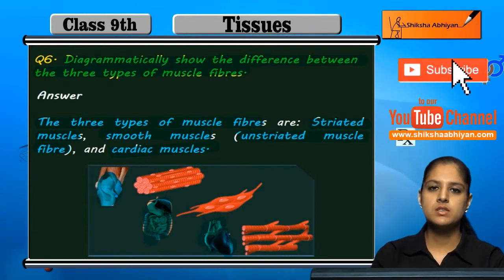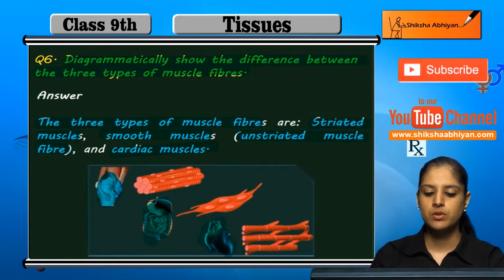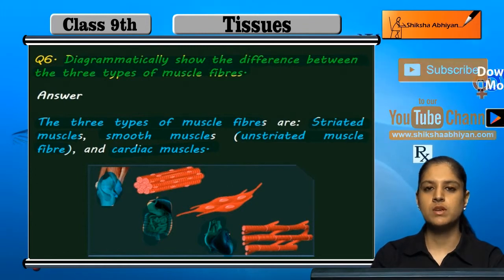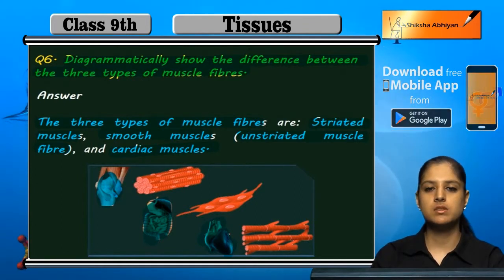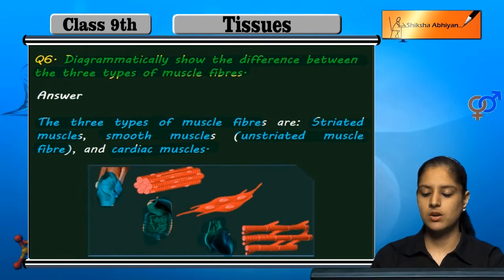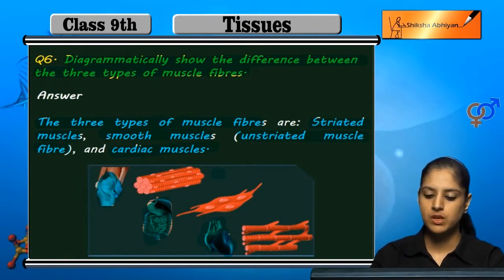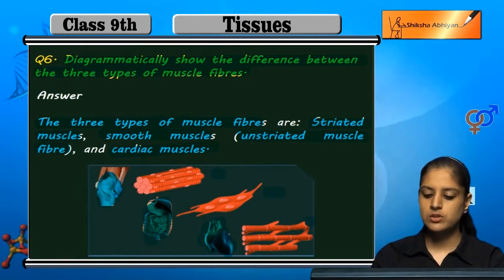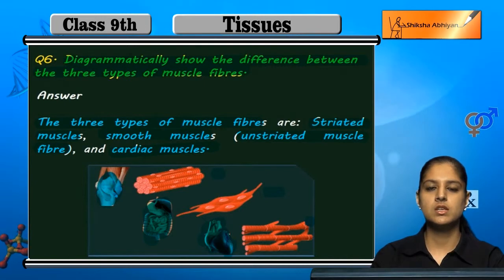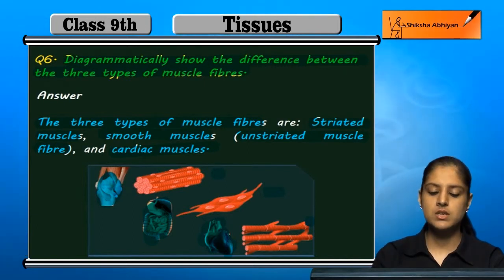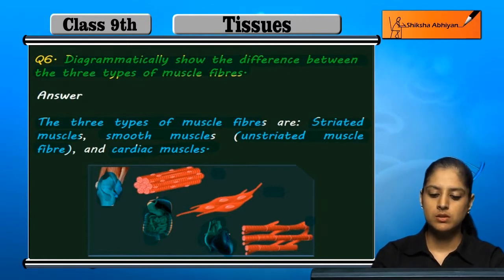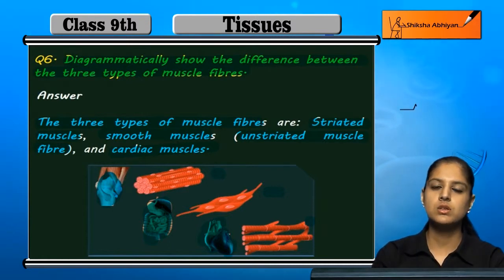Organs need smoothness, so they have smooth or unstriated muscles, and cardiac muscles are of the heart. You can see the three structures and the three orientations are completely different. The striated muscles, because they constitute bones.